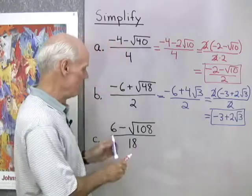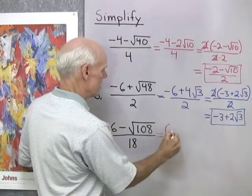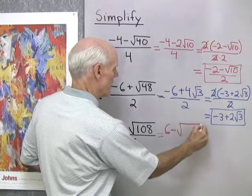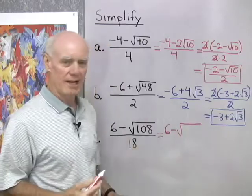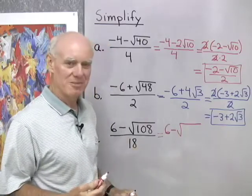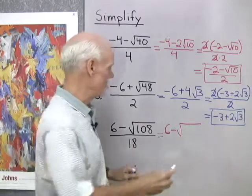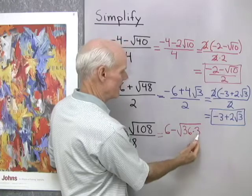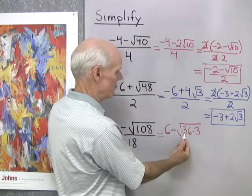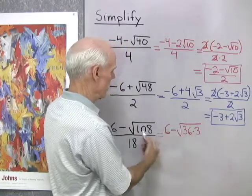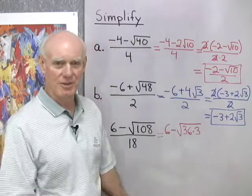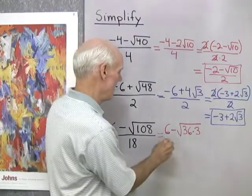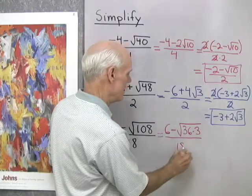Okay, one last problem. Let's see. 6 minus square root of, let's see, 108. The largest perfect square that divides that, I think it's 36. Let's see, 36 times 3, is that right? 3 times 6 is 18, carry the 1, 3 times 3 is 9, and 1 is 10, so 108. So 36 times 3 is 108, all divided by 18.